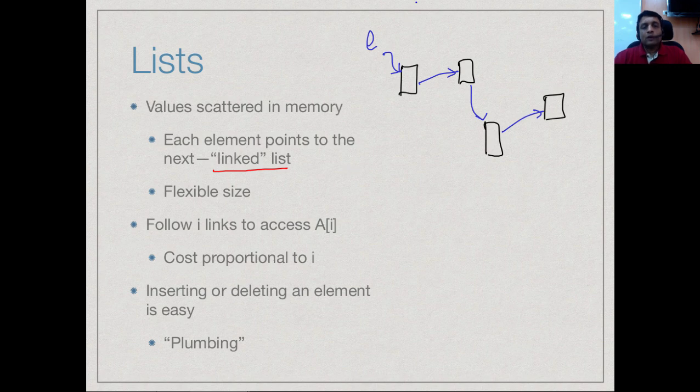Now what this means is that if I want to find where, say, l[2] is, so let's assume that this is l[0], l[1], and l[2], then I have no idea in general where l[2] is located. But I know where l[0] is located because my list name in my program l will point to l[0], so I have to follow these arrows until I reach l[2].